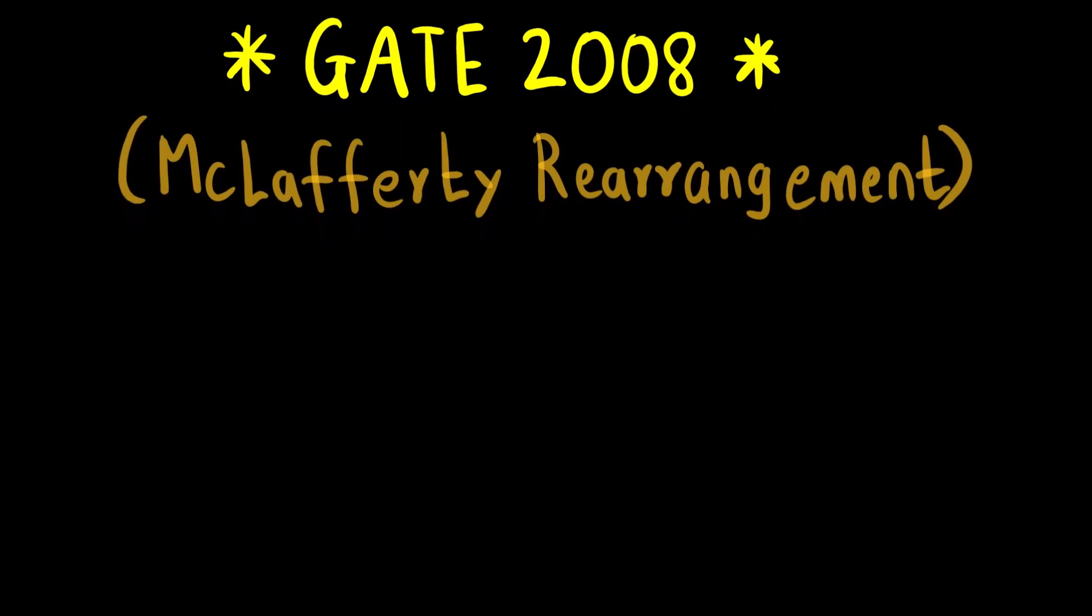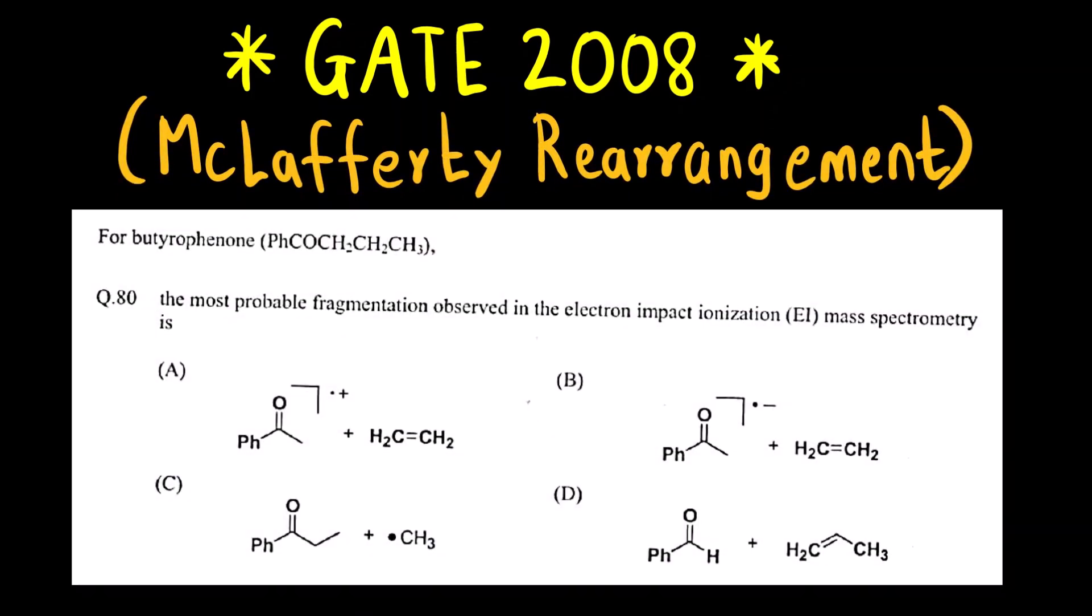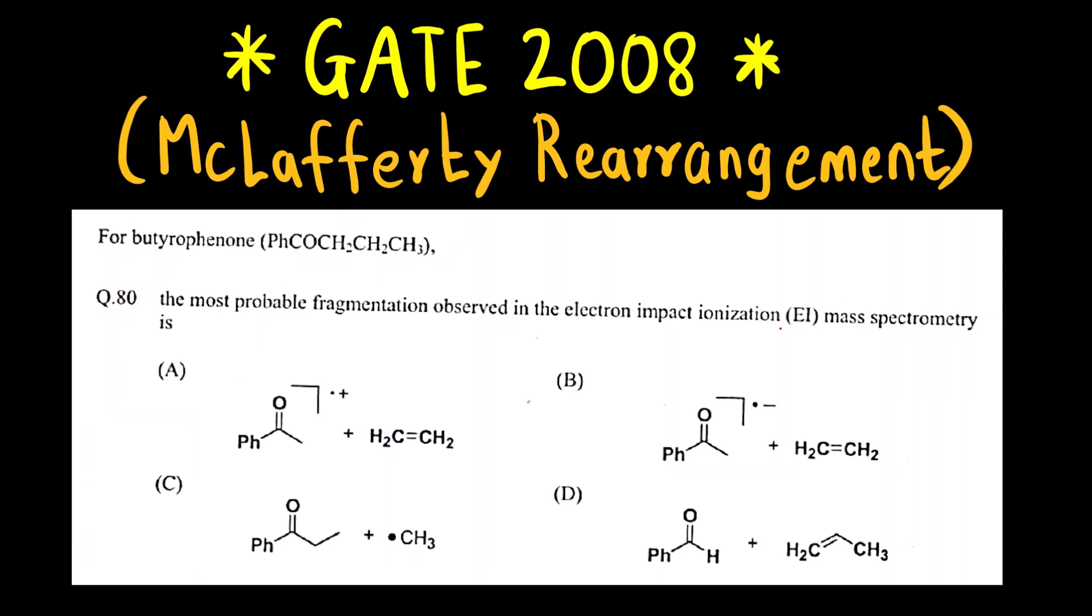Hello everyone! Welcome to Chemazon Complete Chemistry. In this video, we are going to solve the question of GATE 2008 paper which is based on McLafferty rearrangement. This is a question for butyrophenone: the most probable fragmentation observed in electron impact ionization mass spectrometry is.